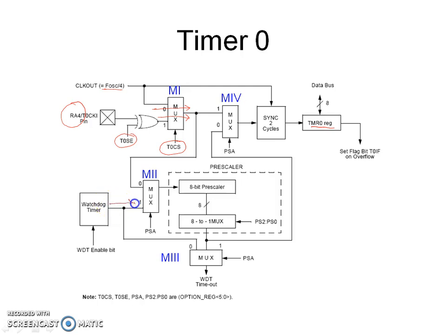Input number 0 of M2 is connected to the output of M1. Input number 1 of M2 is connected to the output of the watchdog timer. The control input of M2 is connected to PSA, that is the prescalar assignment bit. When PSA is 0, the output of M2 is the output of M1. When PSA is 1, the output of M2 is the output of the watchdog timer.